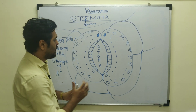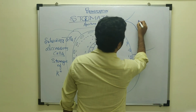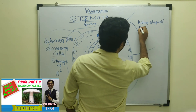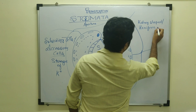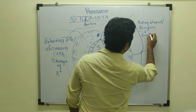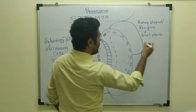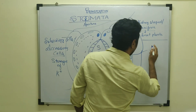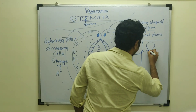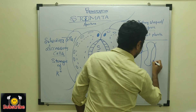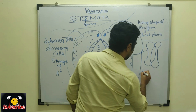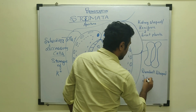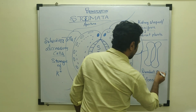Another key point: guard cells are kidney-shaped, also called reniform-shaped, and this type is seen mainly in dicot plants. In monocot plants, however, the guard cells appear like a dumbbell — dumbbell-shaped guard cells are seen in the leaves of monocot plants.